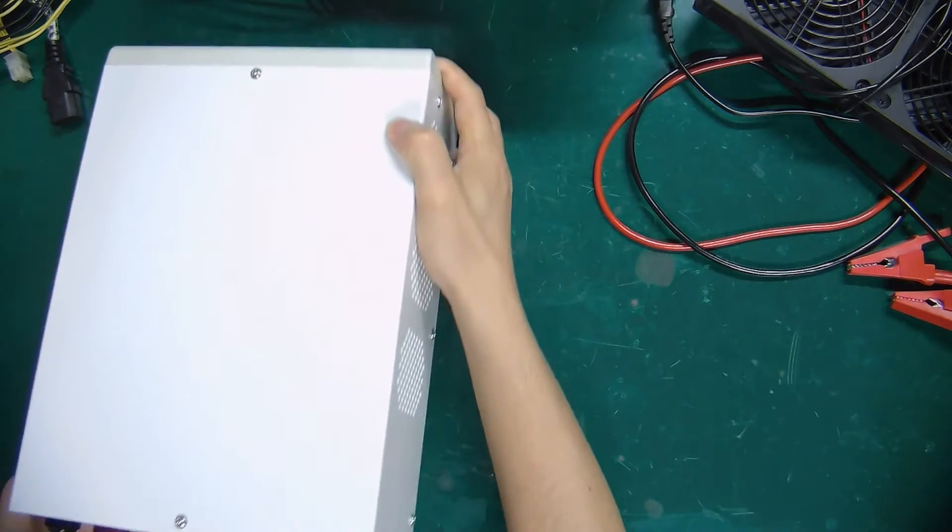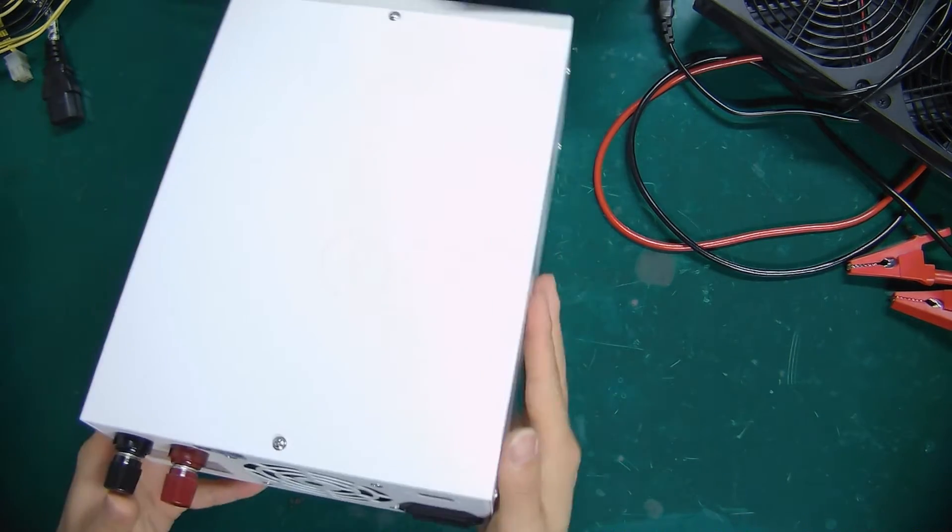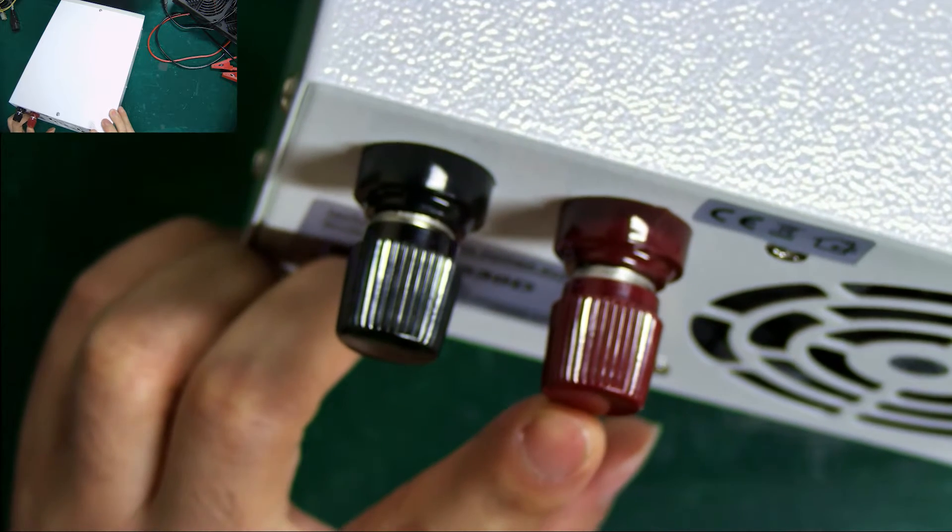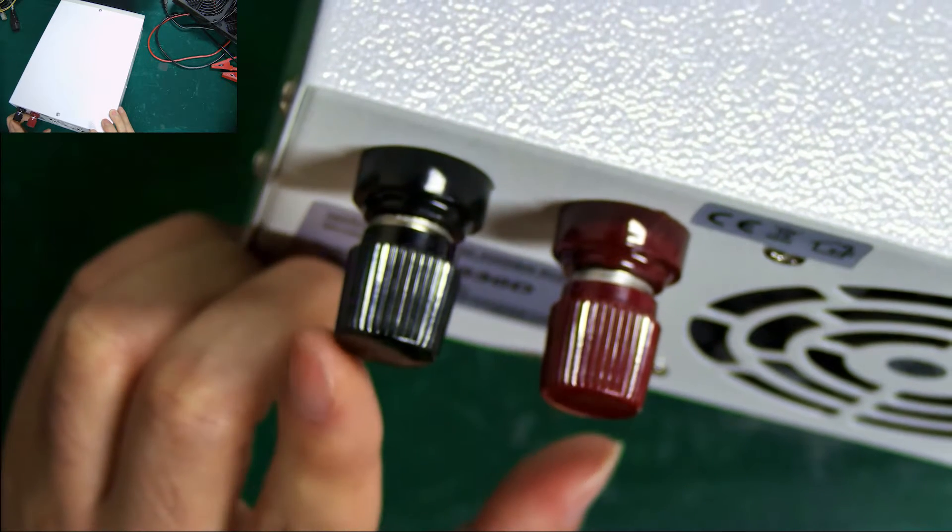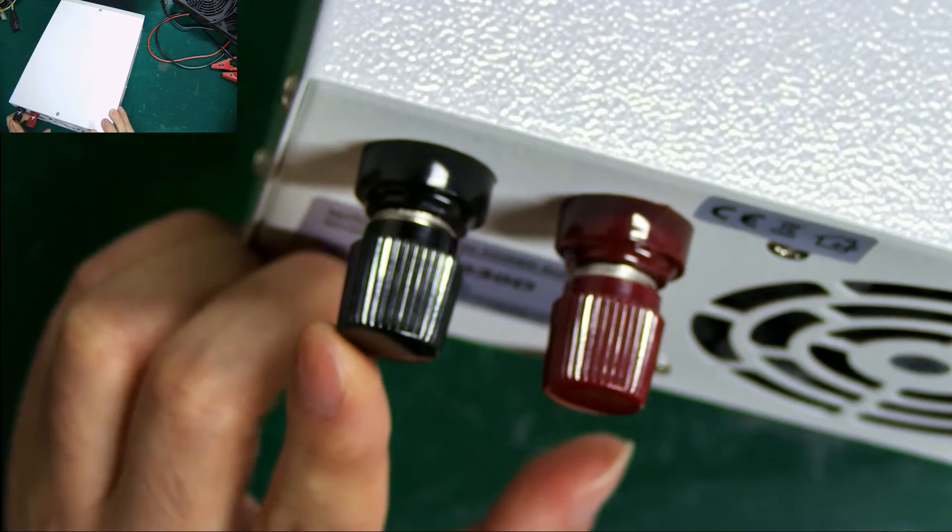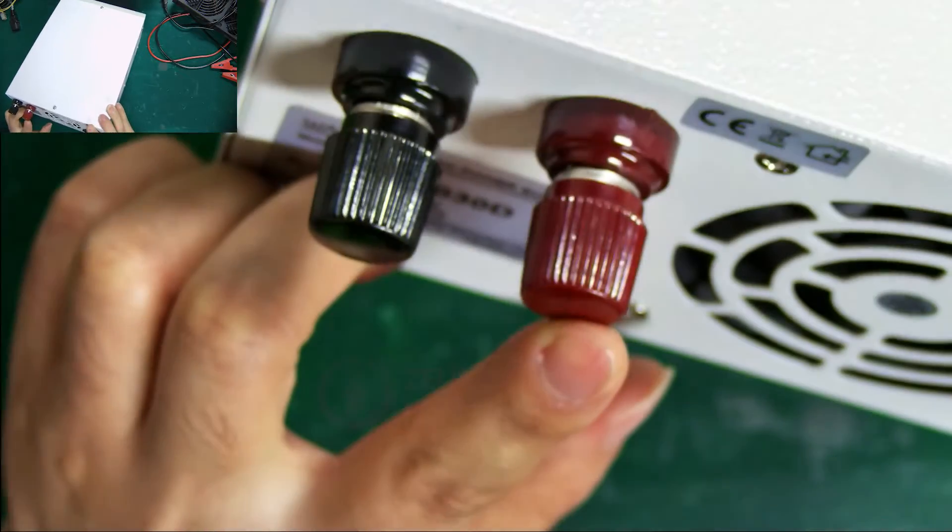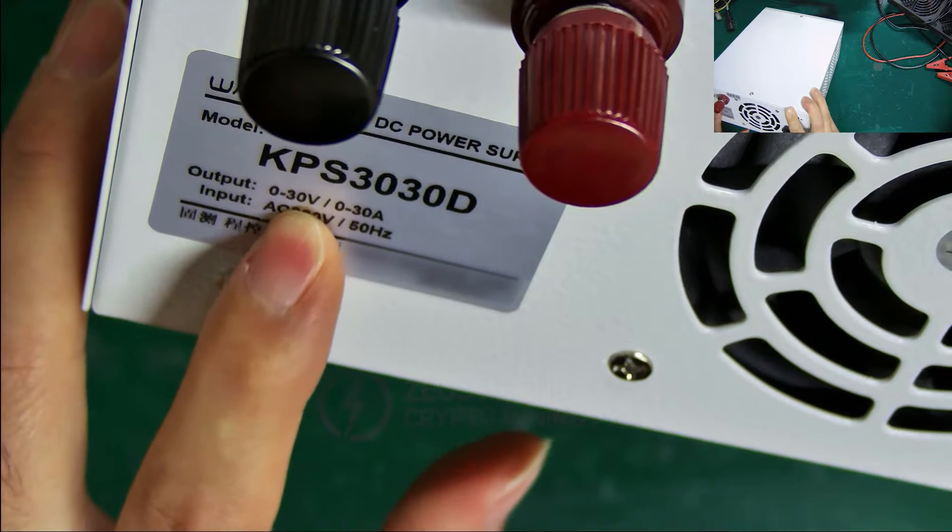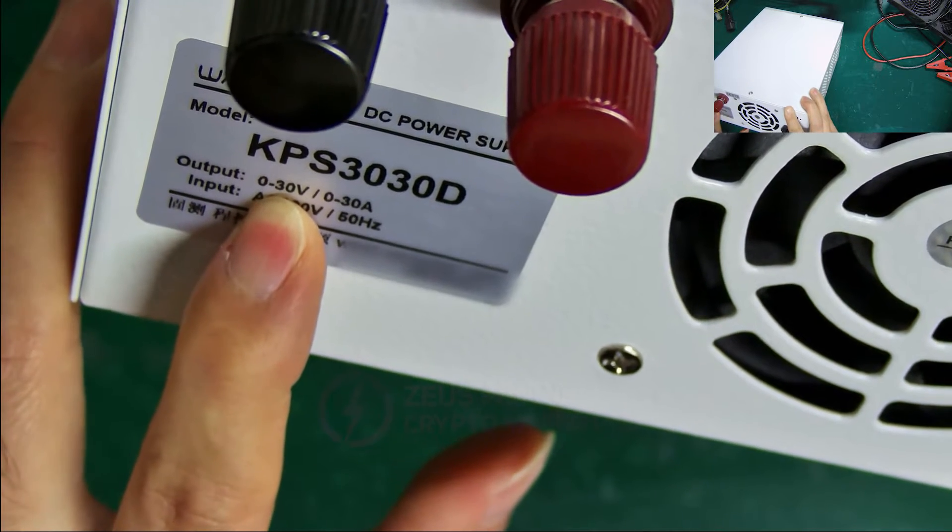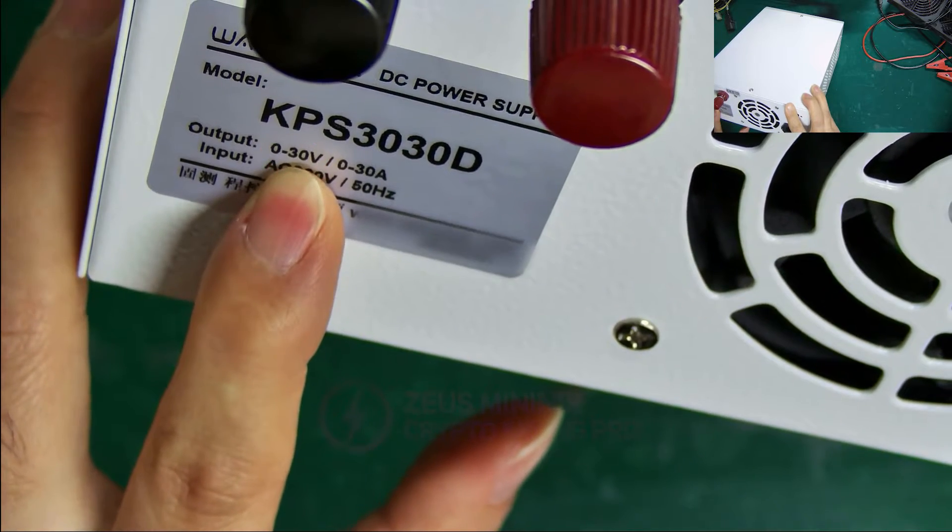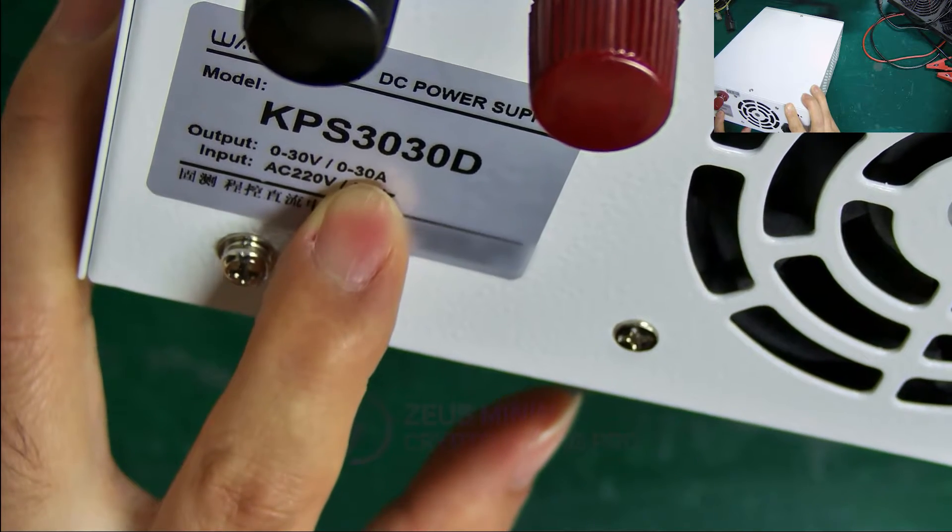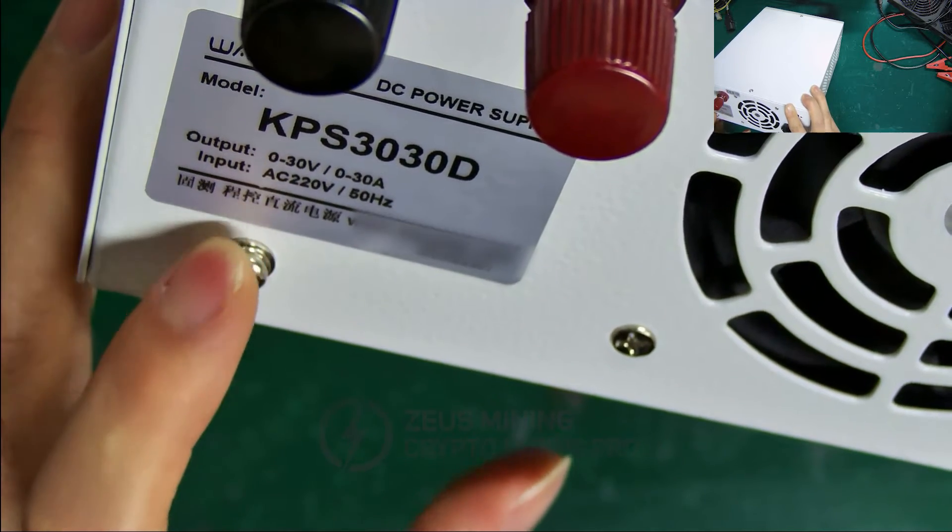Let's first understand its interfaces and setting methods. These two are the DC voltage output interfaces, with black representing the negative pole, and red being the positive pole. On this label, we can see that the maximum output voltage of the power supply is 30 volts, the maximum current is 30 amperes, and the maximum output power is 1000 watts.